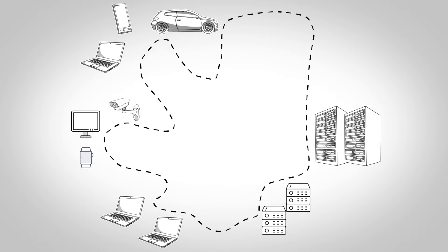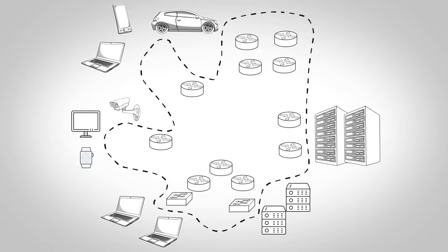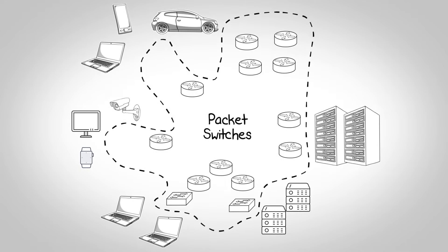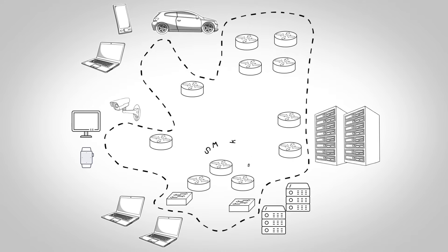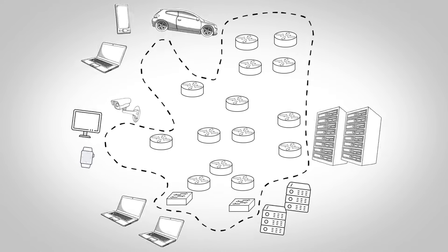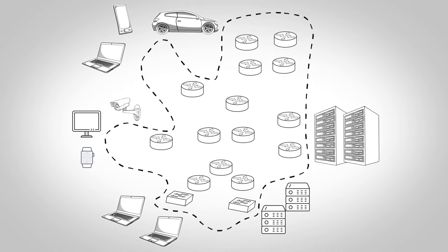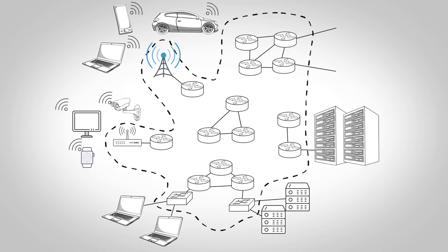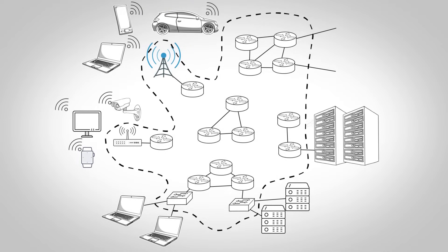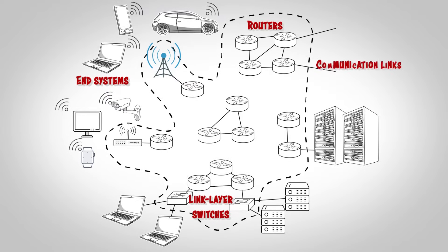If we move deeper, we will find devices which forward data among each other and end systems. We call them as packet switches. There are two types of packet switches: routers and link layer switches. End systems, routers, and link layer switches are connected to each other via communication links. So the parts or components of the internet are end systems, routers, link layer switches, and communication links.